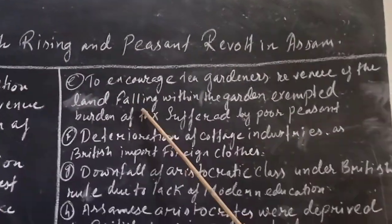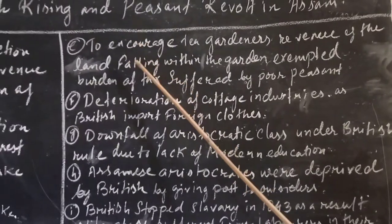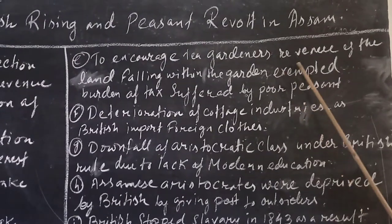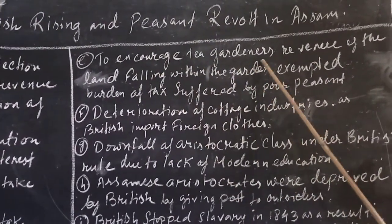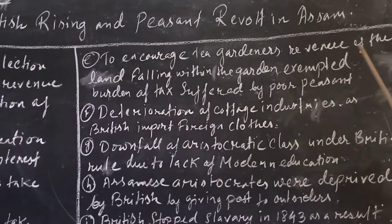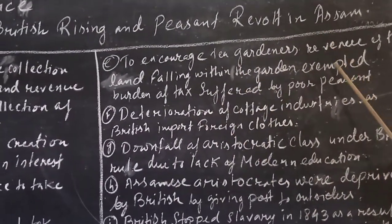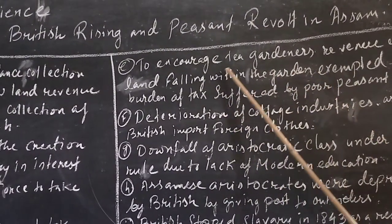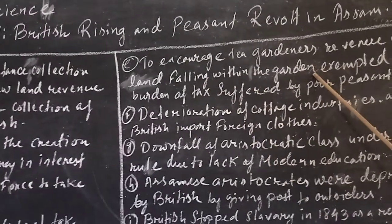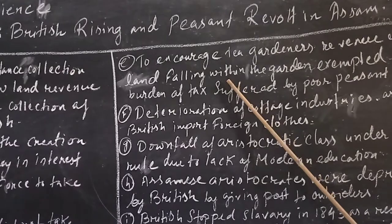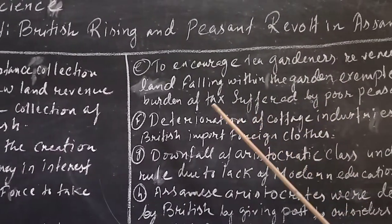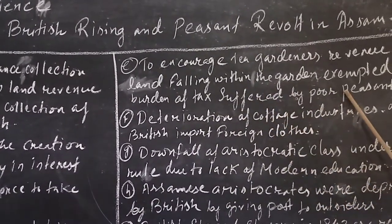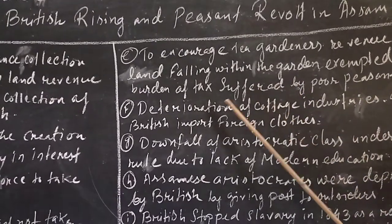The next reason: to encourage tea gardens, revenue of land falling within the garden was exempted. The British were more interested in business, so they exempted tax on land within tea garden areas. The burden of tax therefore fell on the poor peasants and poor farmers of Assam, who had to bear this additional tax burden.